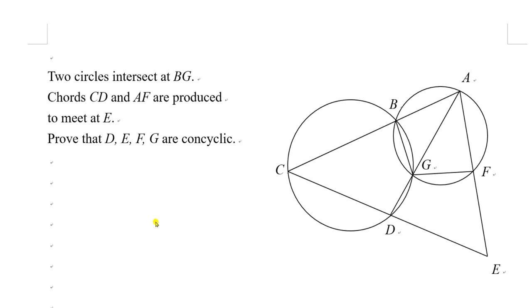In the figure you can see that two circles intersect at B, G. Chords CD and AF are produced to meet at point E. Now you need to prove that D, E, F, G are cyclic.